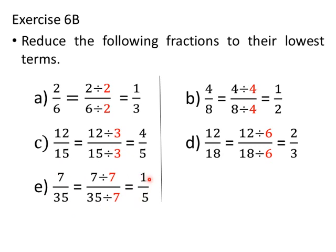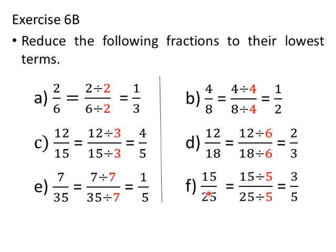The last sum: Reduce 15 by 25 to its lowest term. The HCF of 15 and 25 is 5. So divide both 15 and 25 by 5. Thus, 15 divided by 5 upon 25 divided by 5 equals 3 upon 5. The lowest term of 15 by 25 is 3 by 5.